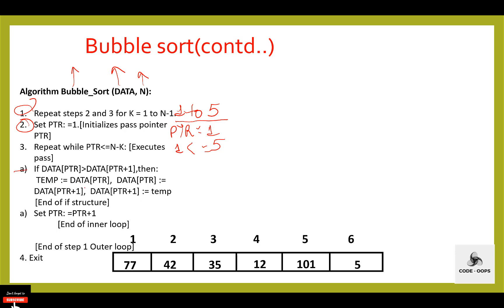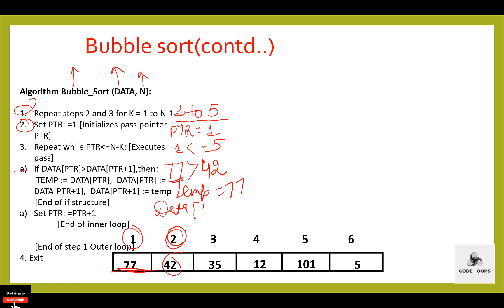Then check the if condition: if data[ptr] is greater than data[ptr+1]. ptr is 1, data[ptr] is 77. 77 is greater than data[ptr+1], which is data[2] = 42. 77 is greater than 42, condition is true. Then temp is equal to data[ptr], so temp equals 77. data[ptr] is equal to data[ptr+1], which is 42. And data[ptr+1] is equal to temp, which is 77. After swapping, data[1] is 42 and data[2] is 77.